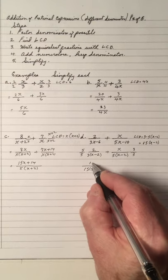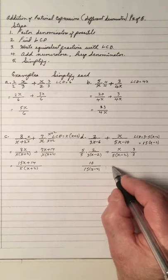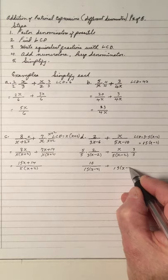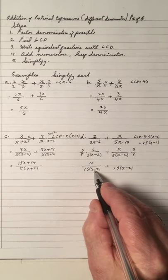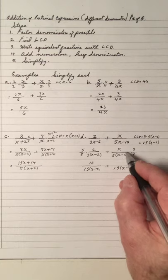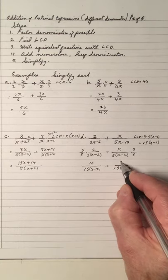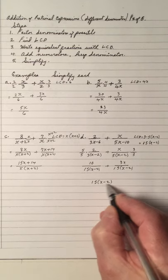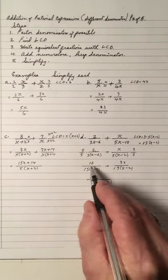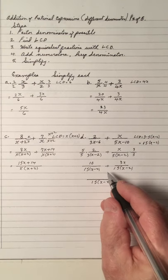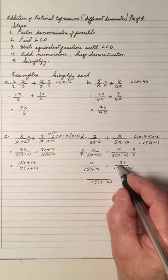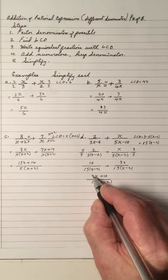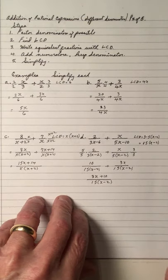5 times 2 gives 10, and x times 3 is 3x. We have the same denominator, so we write it down and add. When we add, we put the result in descending order: 10 plus 3x is the same as 3x plus 10, all over 15(x−2). That one is done.